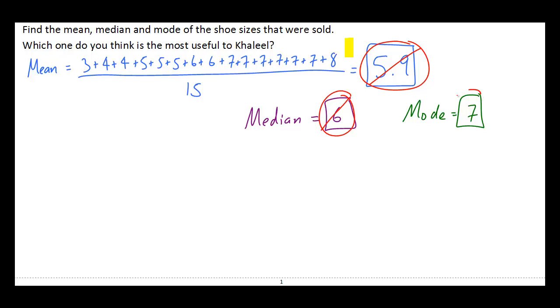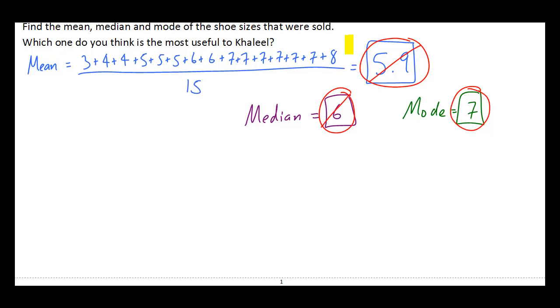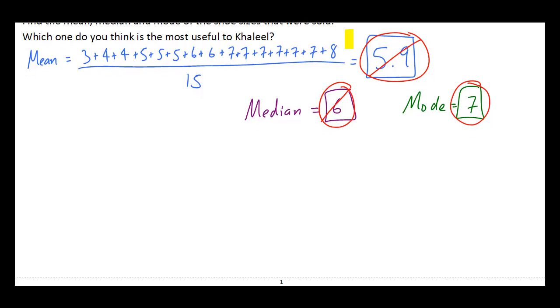However, the mode, if you think about it, the mode is the most commonly occurring number. So in this case, that's the shoe size that he sold the most of. So if Khalil was planning for his next day, he'd probably be most interested in the mode because that would tell him exactly which of the shoes he sold the most of. So in this case, the mode is the most useful.